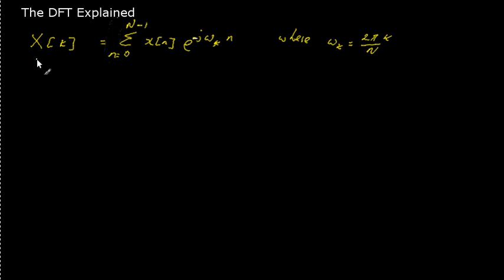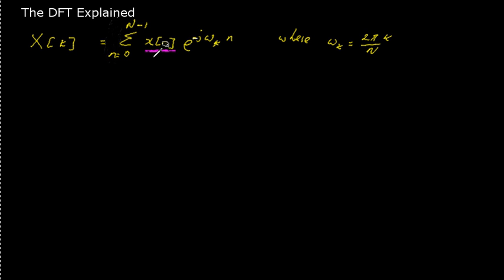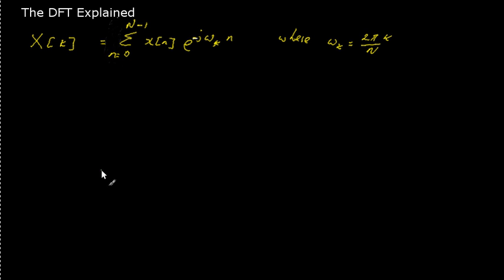In this presentation I'm going to try to explain this complicated looking expression, which is the formula for the discrete Fourier transform. The discrete Fourier transform is basically trying to analyse a signal x of n, which is a time-domain signal, and determine the sinusoids that signal is made up of. All Fourier analysis techniques are trying to identify the sinusoids present in a signal. The DFT is the discrete version which deals with discrete signals.